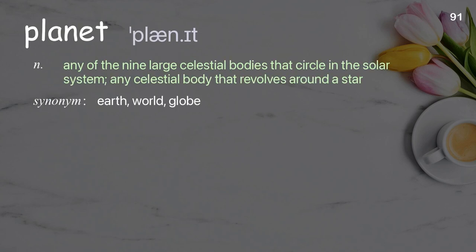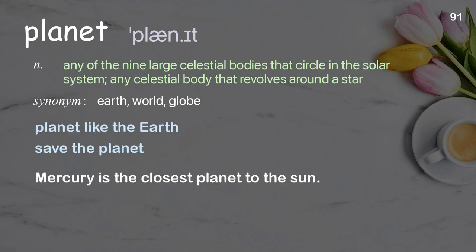Planet: any of the nine large celestial bodies that circle in the solar system; any celestial body that revolves around a star. Examples: planet like the earth, save the planet. Planet Mercury is the closest planet to the sun.